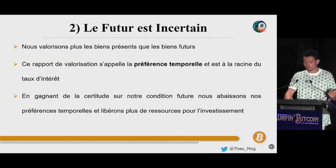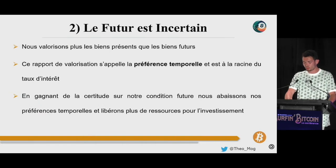C'est ce processus de compétition entre les monnaies faibles et fortes qui explique la démonétisation des pointes de flèche, des pots de castor, des coquillages, du sel, du bétail, du bronze et des autres monnaies primitives en faveur de l'or et de l'argent. Puis au XIXe siècle, avec l'augmentation de notre productivité, l'argent est devenu plus abondant que l'or et ce dernier s'est donc naturellement imposé comme monnaie mondiale.